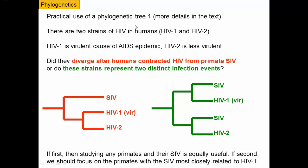The first practical use of a phylogenetic tree comes from the textbook. It's known that there are essentially two major strains of HIV in humans: HIV-1 and HIV-2. HIV-1 is virulent and is the major cause of the AIDS epidemic. HIV-2 is less virulent and less of a public health risk — the disease does not kill and spread as rapidly as HIV-1 does.